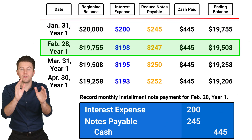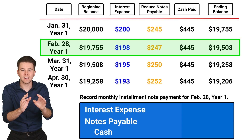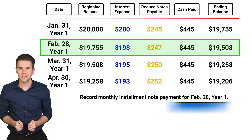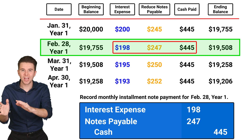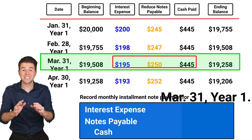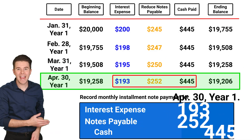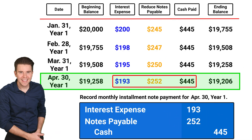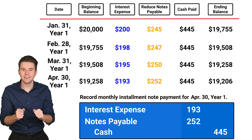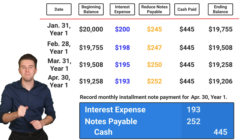For the February installment payment entry, each of the account titles remains the same. Just the amounts will change based on the numbers we pull from the amortization table. The same is true for March and April. At the end of the five years, the note is paid off through 60 monthly installment payments, and the final balance in notes payable is zero.